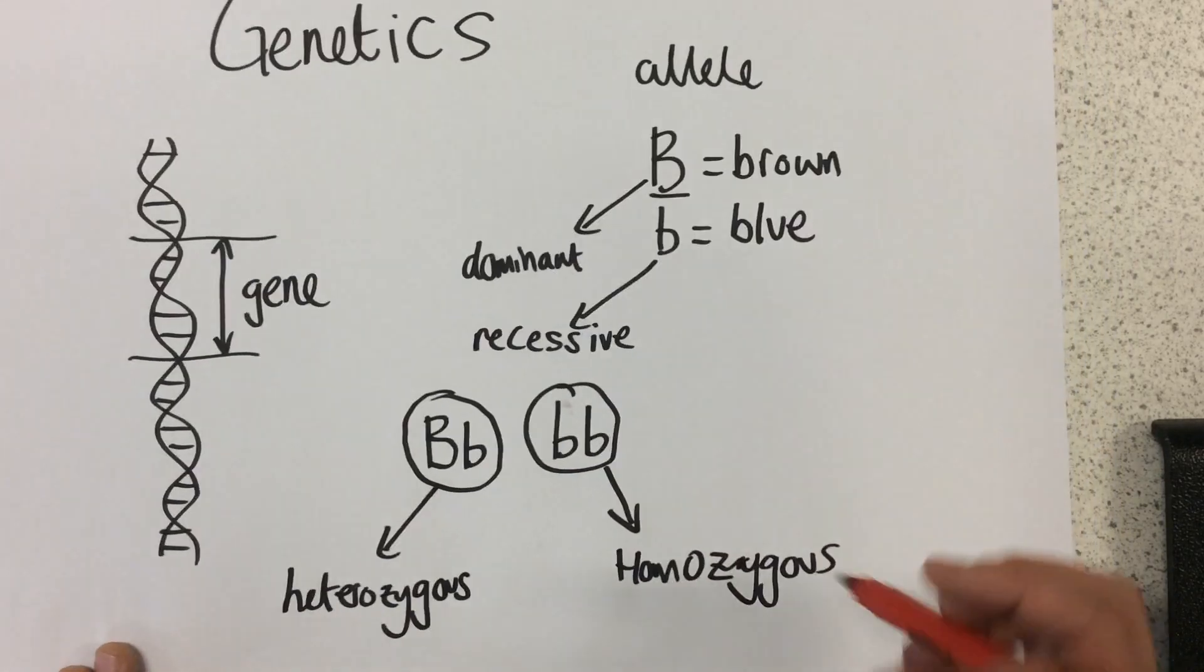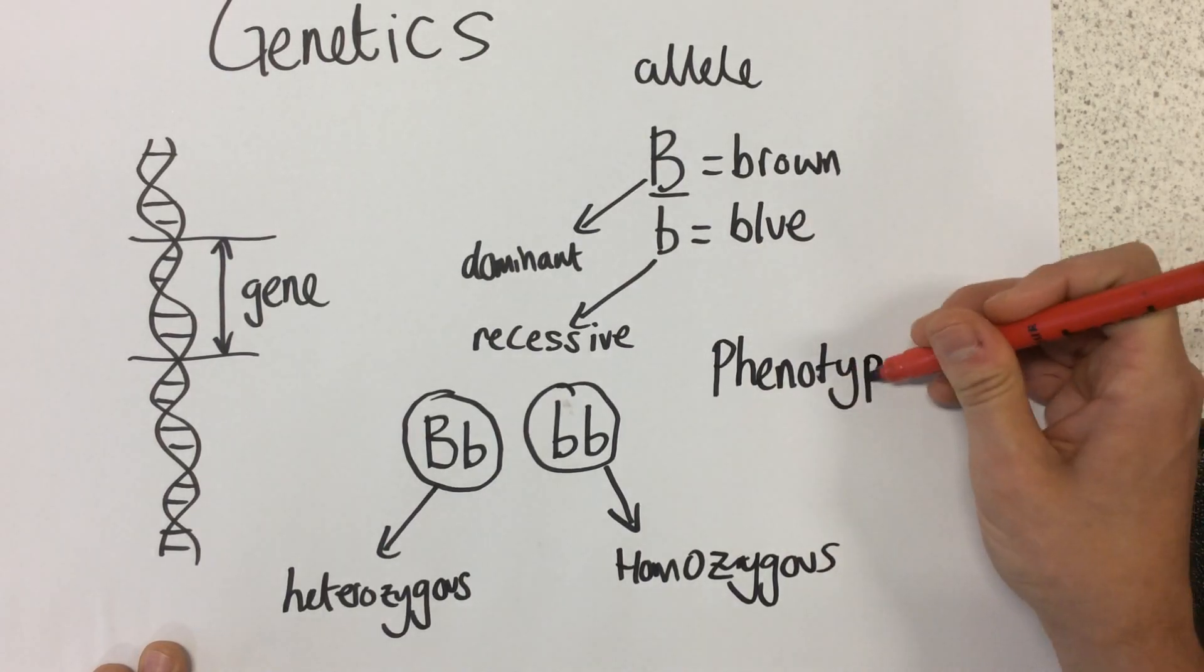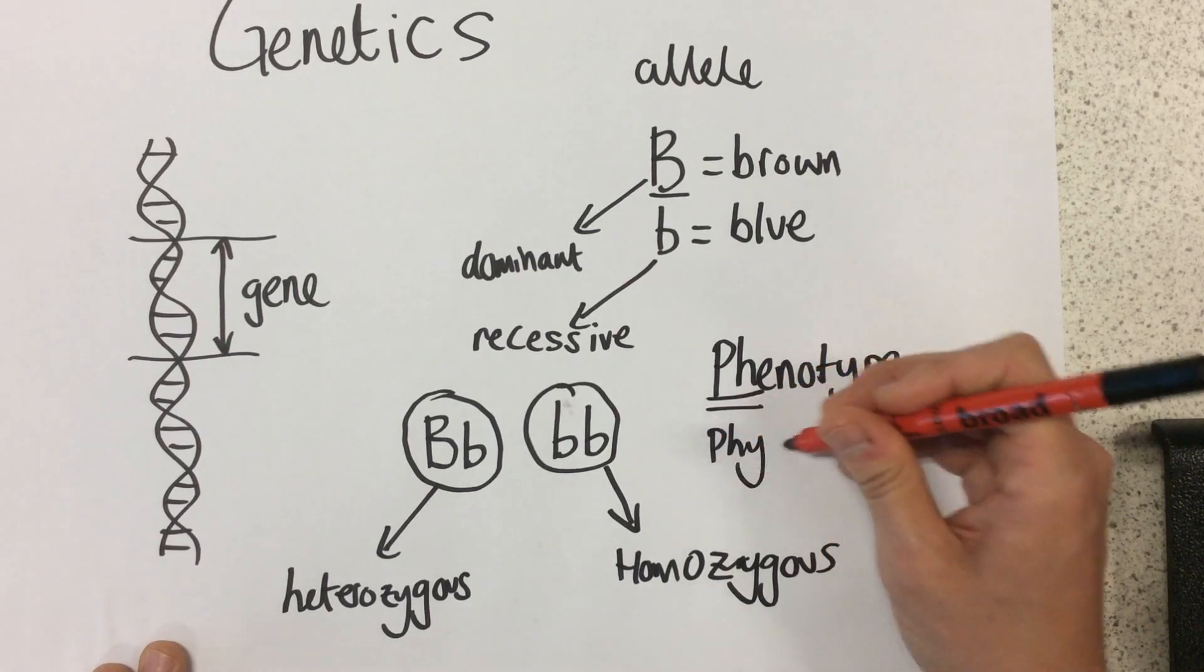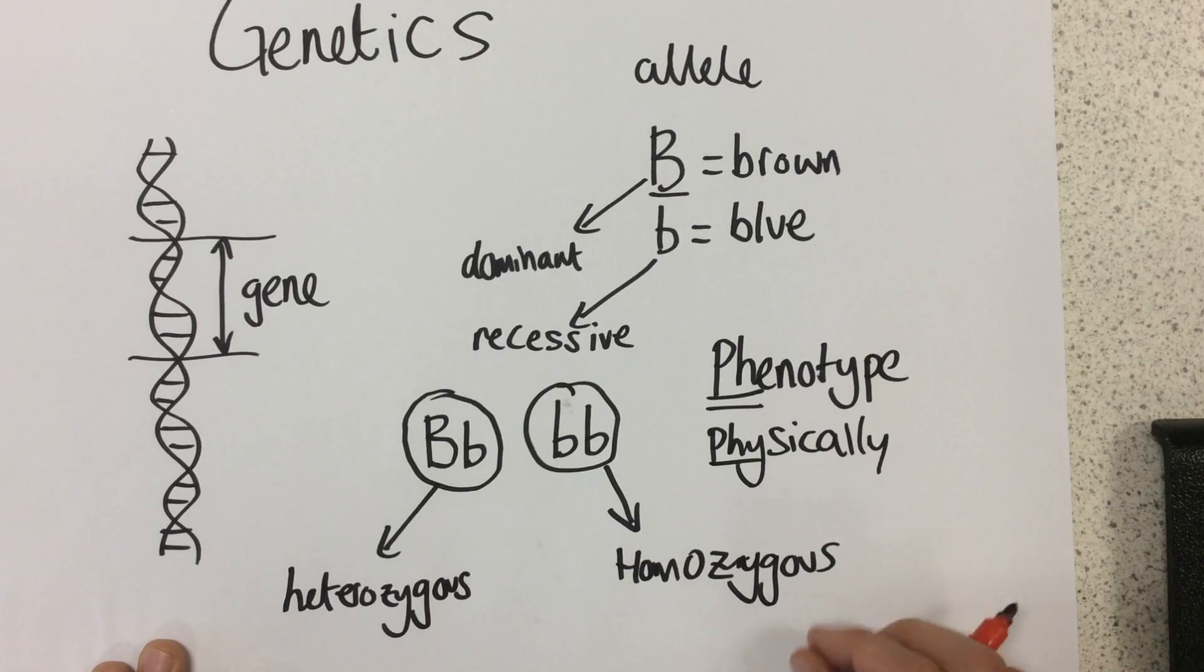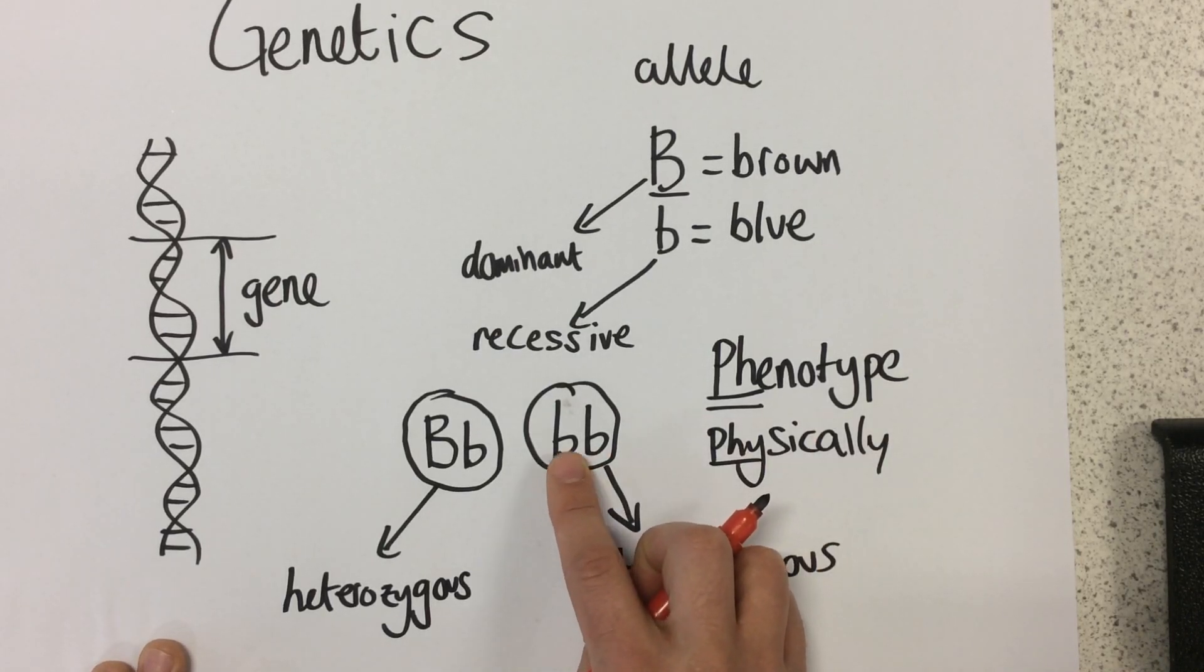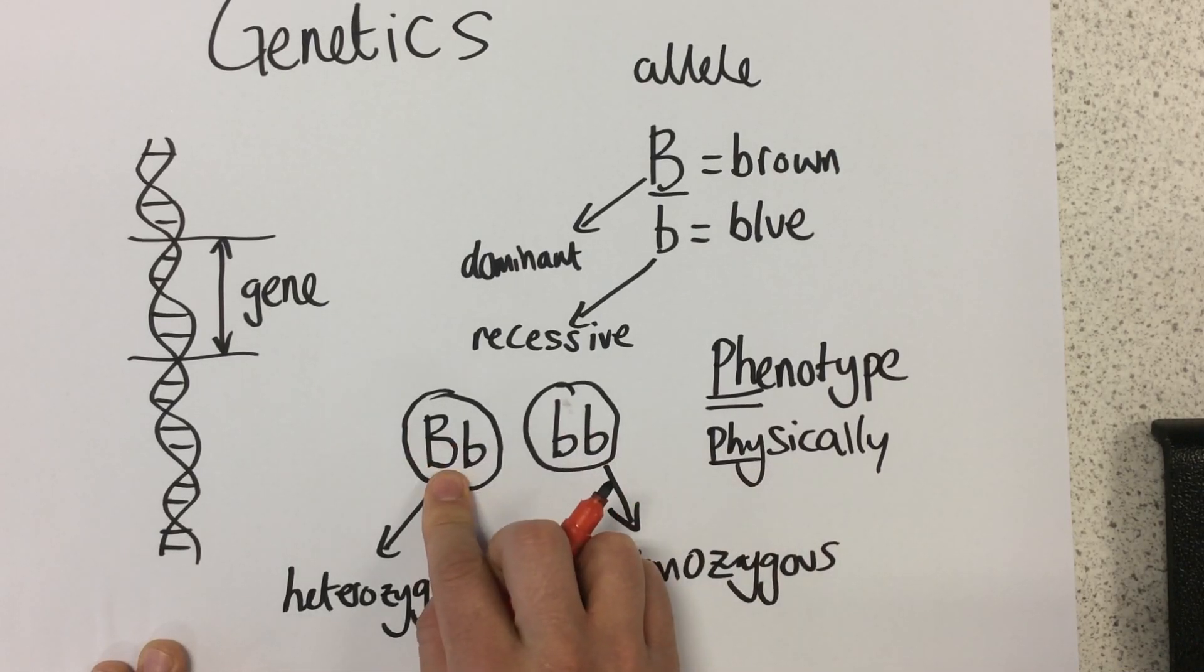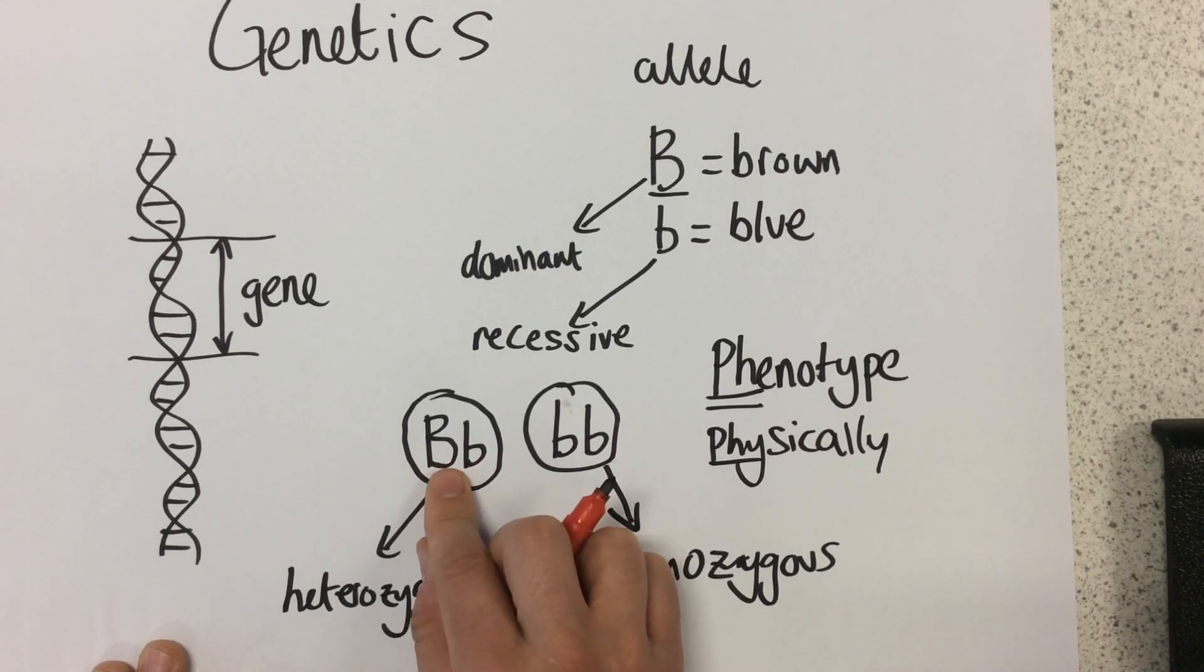The last key word we really need to know is the phenotype. Now, what the word phenotype means is how it physically looks on the outside. Now, what I mean by that is if someone has this genotype of two recessive alleles for blue eyes, their phenotype, how it will physically look, is they have blue eyes. This person's phenotype, because they have that dominant allele, this person's phenotype is that they have brown eyes.